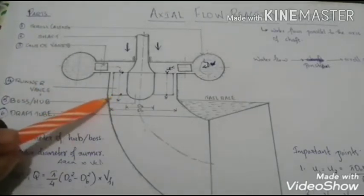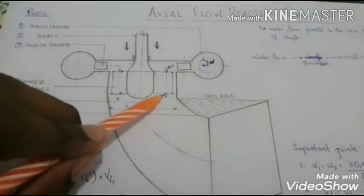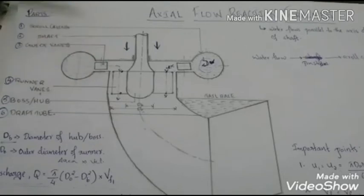And besides this boss or the hub, besides the boss we have the runner vanes. We have the runner vanes which keeps on rotating.